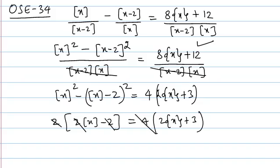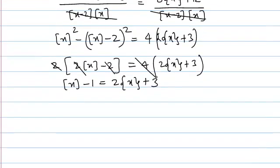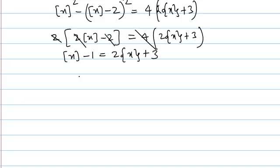After cancellation, what we have is: greatest integer of x minus 1 equals 2 into fractional part of x plus 3. Therefore, greatest integer of x equals 2 into fractional part of x plus 4.